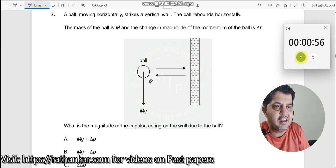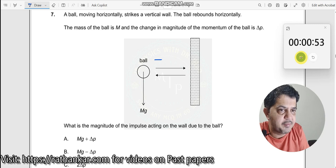A ball moving horizontally strikes a vertical wall. Remember mg is given here but it is moving in this direction. The ball rebounds horizontally - it goes here, it hits here and it comes like this.